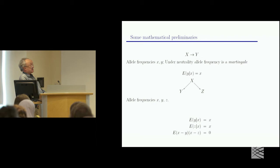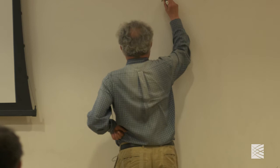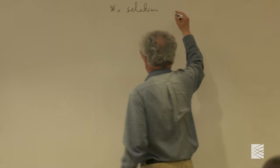Okay, so some ground rules in everything I want to do. I'm going to write here. Ground rules. No selection. So the jargon in population genetics is neutral drift.